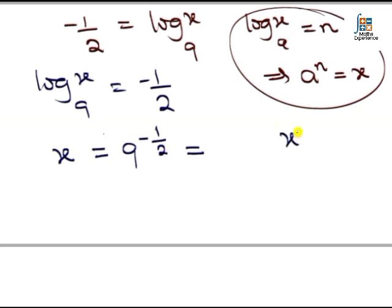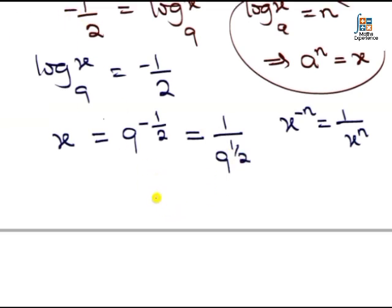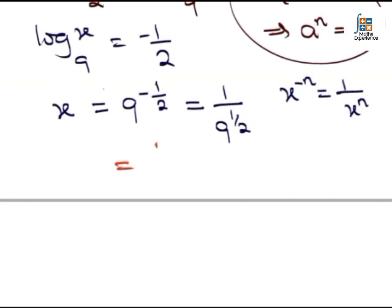of indices, we are told that x to the power of negative index is the same thing as one over the positive index. So this is the same thing as one over nine to the power of half. However, we all know that whenever a number is raised to the power of a half, it is the